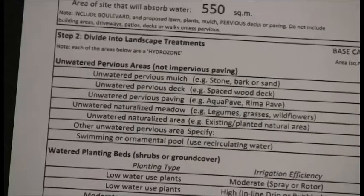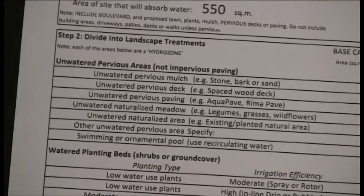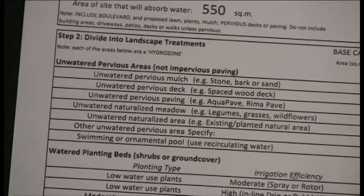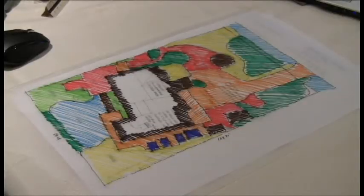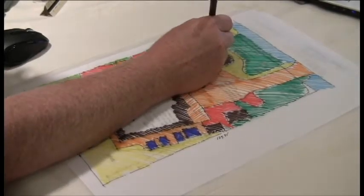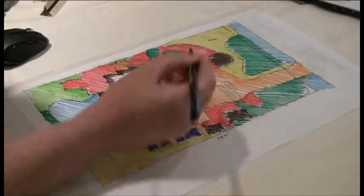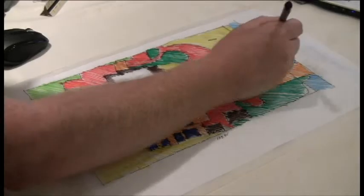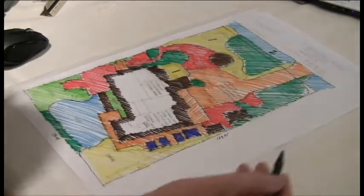Step two in calculating your water savings is to divide that total landscape area into different zones or areas of landscape treatments. Divide your landscape design into areas that have similar water needs, called hydrozones. There can be hydrozones with no water needs or low, medium, or high water needs.